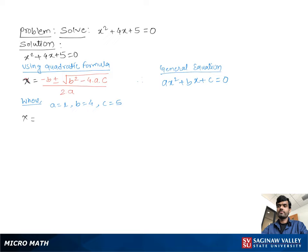Comparing the original equation with the general equation, we get a is equal to 1, b equal to 4, and c equal to 5. Now substituting these values into the quadratic formula.